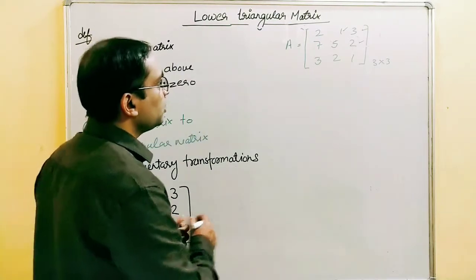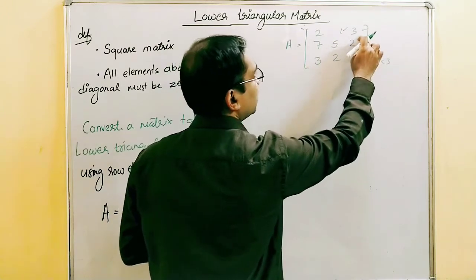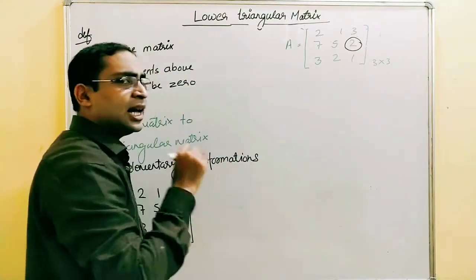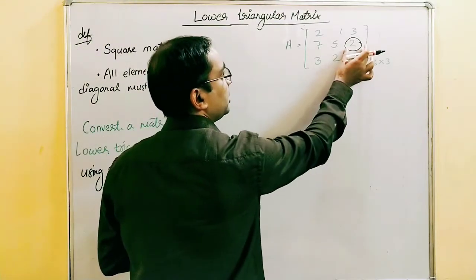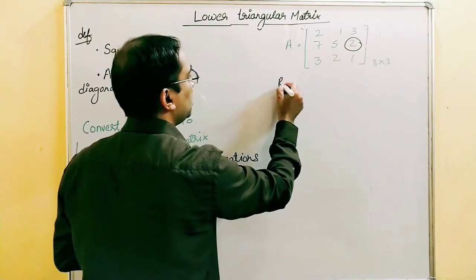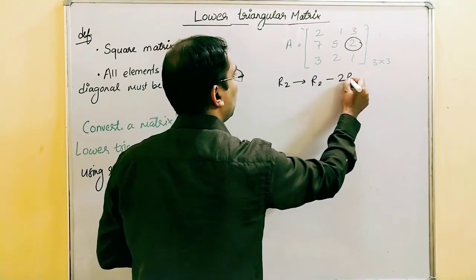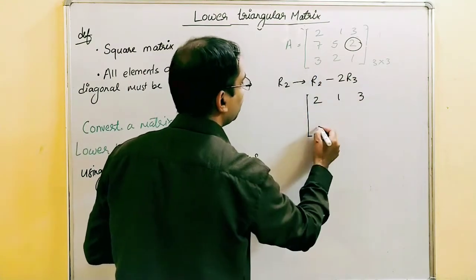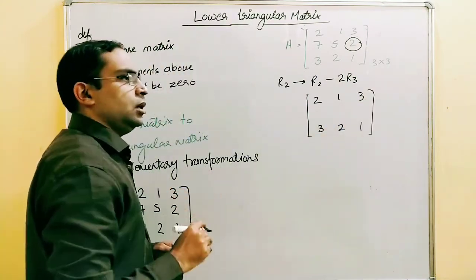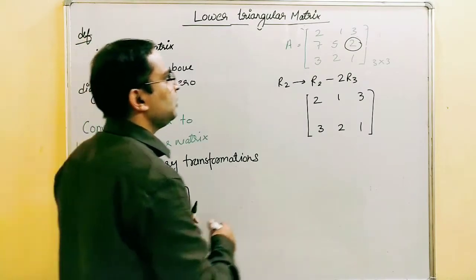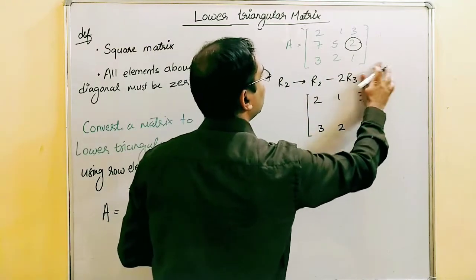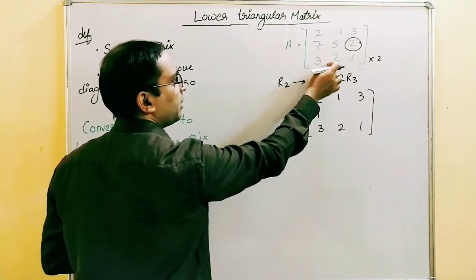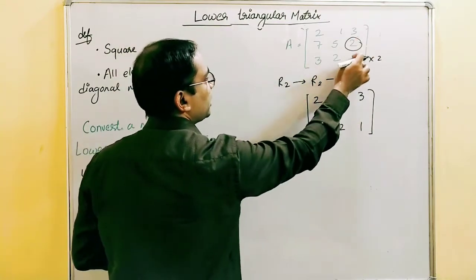Following the rules, we start with the last column and, moving bottom to top, convert the first element. Since it is in column number three, we operate with row number three. The operation is: R2 = R2 − 2×R3. Row one remains as 2, 1, 3 and row three remains as 3, 2, 1. For row two: 3 becomes 6 → 7−6 = 1; 2 becomes 4 → 5−4 = 1; and 2−2 = 0. First step complete.